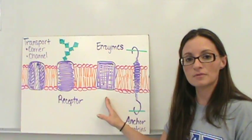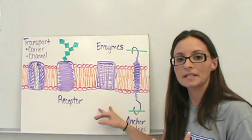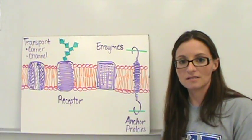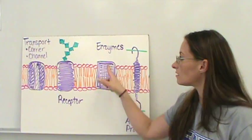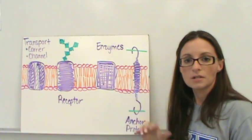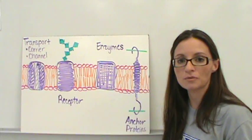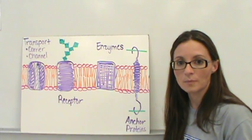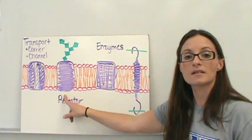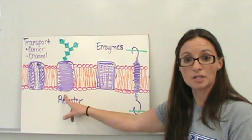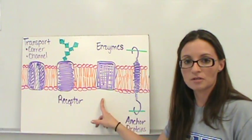The third type of protein is an enzyme protein. This is going to carry out chemical reactions that need to happen just inside or just outside the cell. Those enzyme proteins help chemical reactions happen, and a lot of times they start working because they've received a message from the receptor proteins.